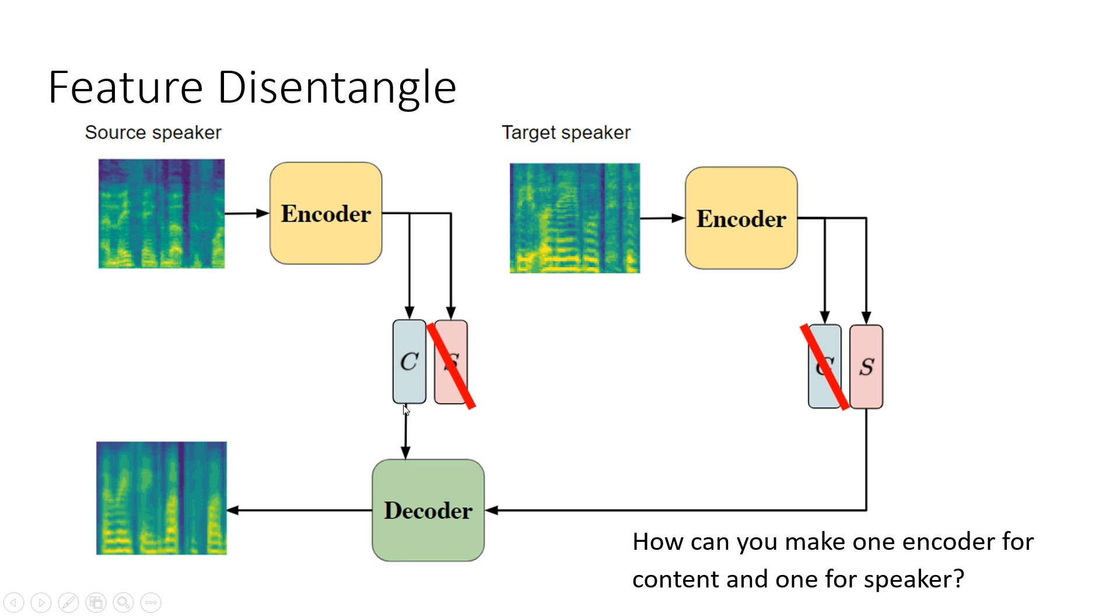You can just take the content embedding of the utterance of the source speaker and the speaker embedding of the utterance of the target speaker into the decoder, then voice conversion is fulfilled. However, one of the problems of feature disentangle based models is: how can we make one encoder for content and one encoder for speaker?